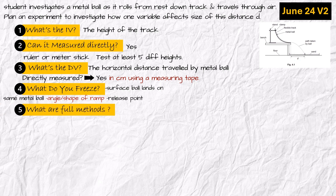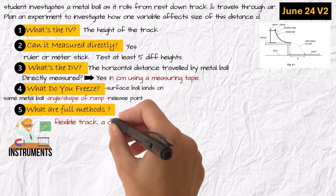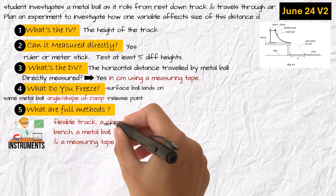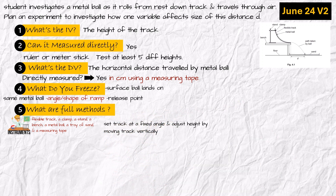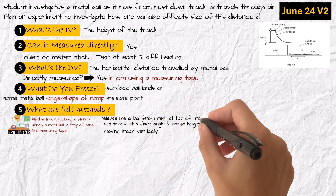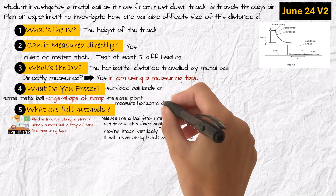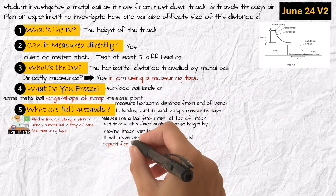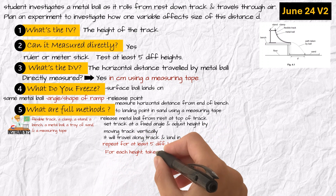Number five: what's the full method, including instruments? To carry out the experiment, I will use a flexible track, a clamp, a stand, a bench, a metal ball, a tray of sand, and a measuring tape. I will set the track at a fixed angle and adjust the height by moving the track vertically. I will release the metal ball from rest at the top of the track. It will travel along the track and land in the sand. I will measure the horizontal distance from the end of the bench to the landing point using a measuring tape. I will repeat for at least five different heights. For each height, I will take three readings and calculate the average distance.